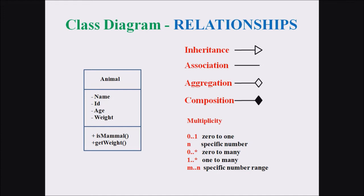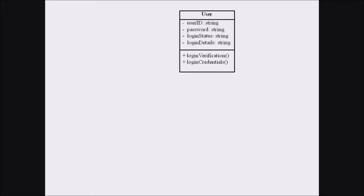Let us consider our example — we are considering the online shopping website's class diagram. Firstly, we are considering a class called User. Here the class name is User, that's why we have mentioned the class name in the topmost compartment of the class diagram. We can see four different attributes related to this class. The different attributes are user ID, password, login status, and login details.